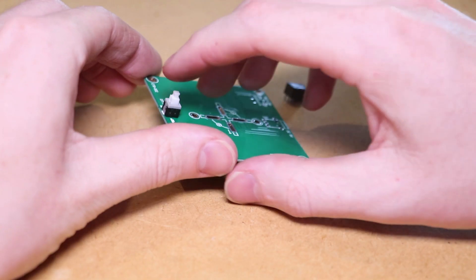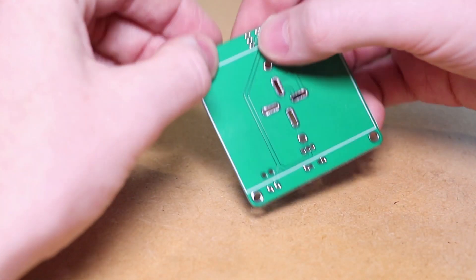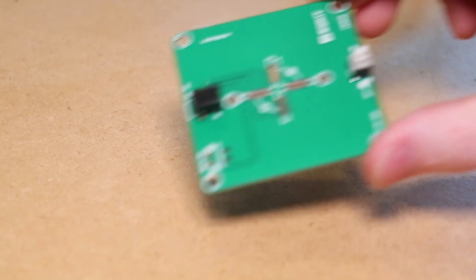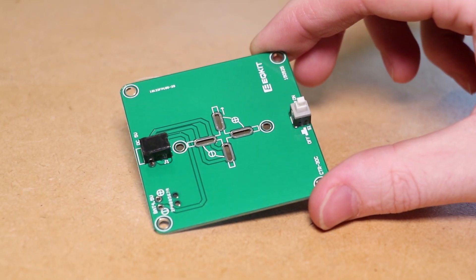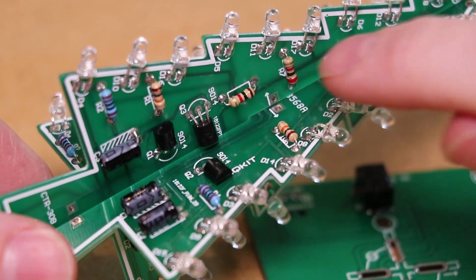With both halves now complete, I then solder the switch and power jack to the base PCB. We can now join the two halves of the tree together and mount it to the base.